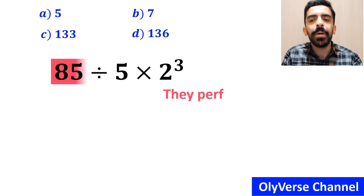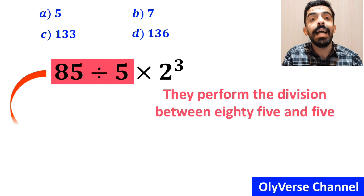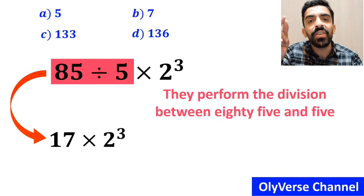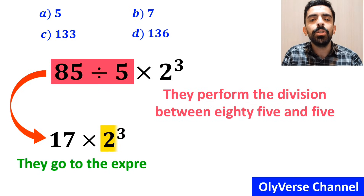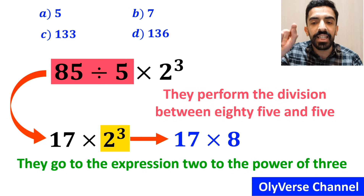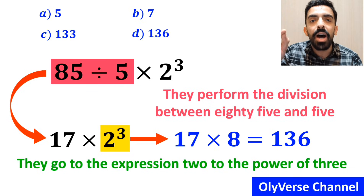Then they perform the division between 85 and 5, and instead of this expression, they write 17 times 2 to the power of 3. In the final step, they go to the expression 2 to the power of 3 and simplify this expression to 17 multiplied by 8, which ultimately gives them the answer 136.